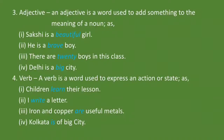Verb: A verb is a word used to express an action or state. Verb कोई action या अवस्था के बारे में बताता है. जैसे, Children learn their lesson. यहाँ learn verb है. I write a letter. यहाँ write verb है क्योंकि यह action बता रहा है. Kolkata is a big city. यहाँ is verb है क्योंकि वह एक अवस्था के बारे में बता रहा है. Iron and copper are useful metals. यहाँ are verb है क्योंकि वह एक state यानि अवस्था के बारे में बता रहा है.